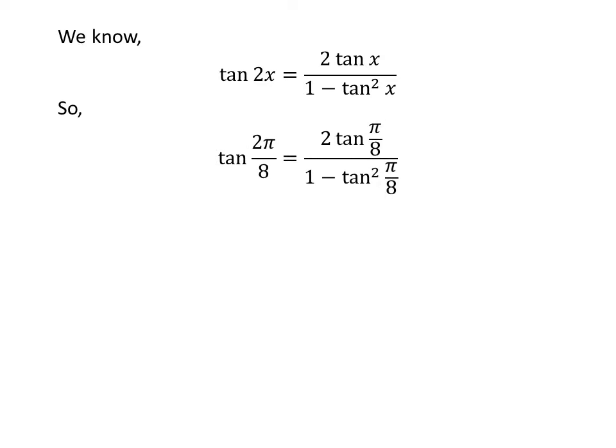Let us plug pi upon 8 in place of x in the above identity. So, tangent of 2 times pi upon 8 is equal to 2 times tangent of pi upon 8 upon 1 minus square of tangent of pi upon 8. Cancelling out the common factor 2 in the numerator and the denominator of 2 times pi upon 8 and shifting 1 minus square of tangent of pi upon 8 from the denominator of the right hand side to the left hand side gives us tangent of pi upon 4 times 1 minus square of tangent of pi upon 8 is equal to 2 times tangent of pi upon 8.